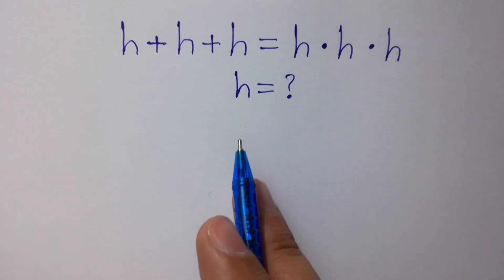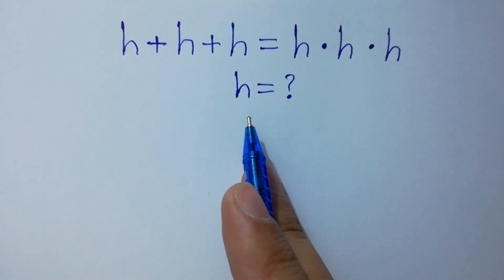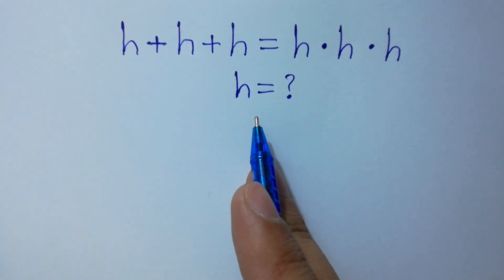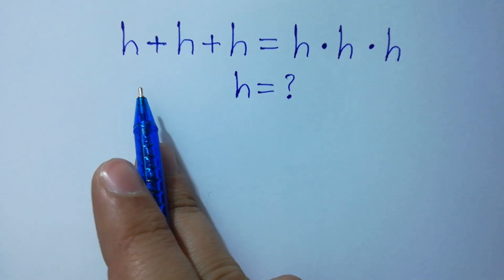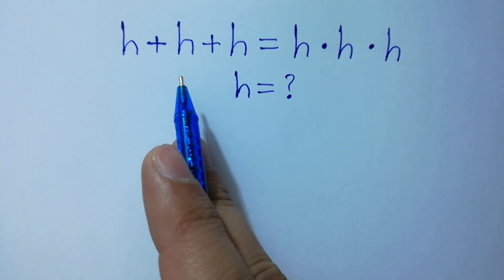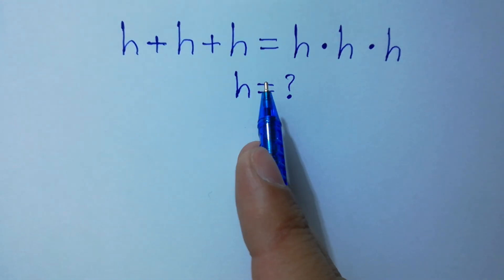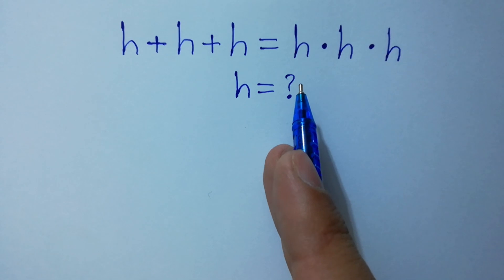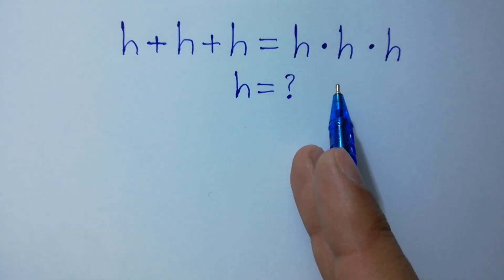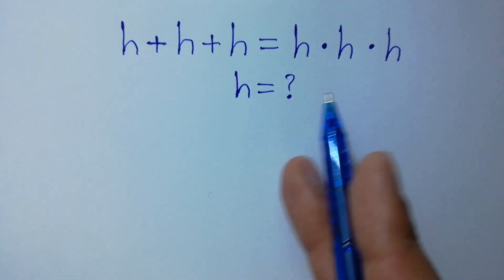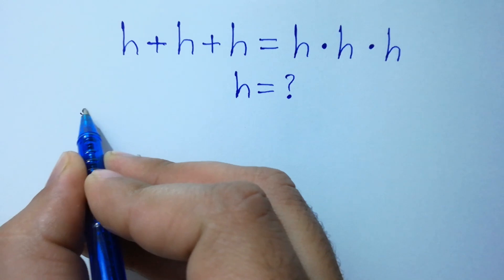Hello friends. Find the value of h if h plus h plus h equals h times h times h. Let's have a solution.